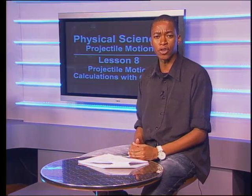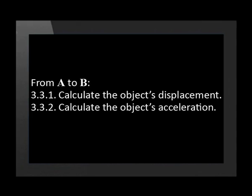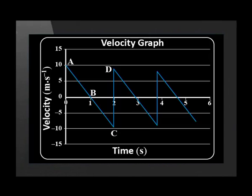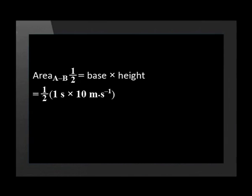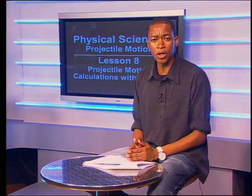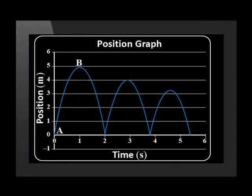Now for some calculations related to the velocity-time graph. First, we are asked about interval A to B — we have to find the object's displacement and acceleration. The area under a VT graph gives the object's displacement during that time period. The base of this triangle is 1 second and the height is 10 meters per second. Substituting these values gives an answer of 5 meters — the ball moves 5 meters upward in this interval. Looking at the position-time graph, the ball moves from the ground up to 5 meters above the ground, so its displacement from A to B is 5 meters upward.